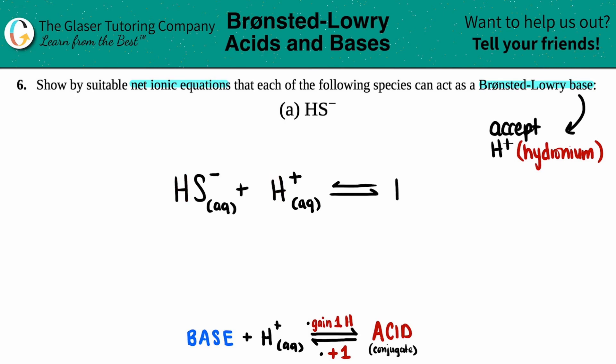So I'm just going to say that, okay, I had HS, but now I have two of them. So I write H2S. This is my conjugate acid. My conjugate acid is always going to be one hydrogen more than my base. And it's an acid, so aqueous.